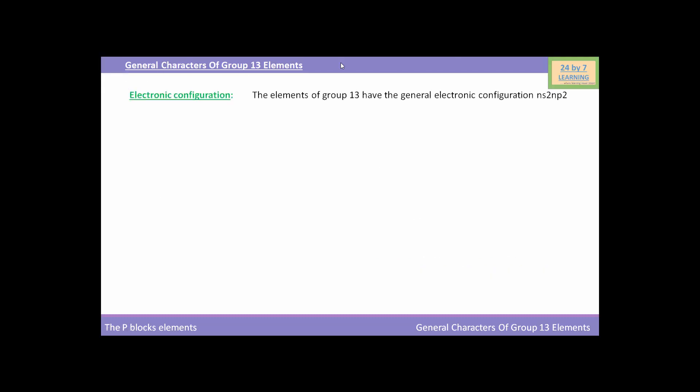In general characters of group 13 elements, first we will discuss the electronic configuration. The elements of group 13 have the general electronic configuration NS2 NP1. Boron has electronic configuration 2s2 2p1, aluminum has 3s2 3p1, gallium has 4s2 4p1, indium has 5s2 5p1, and thallium has electronic configuration 6s2 6p1.